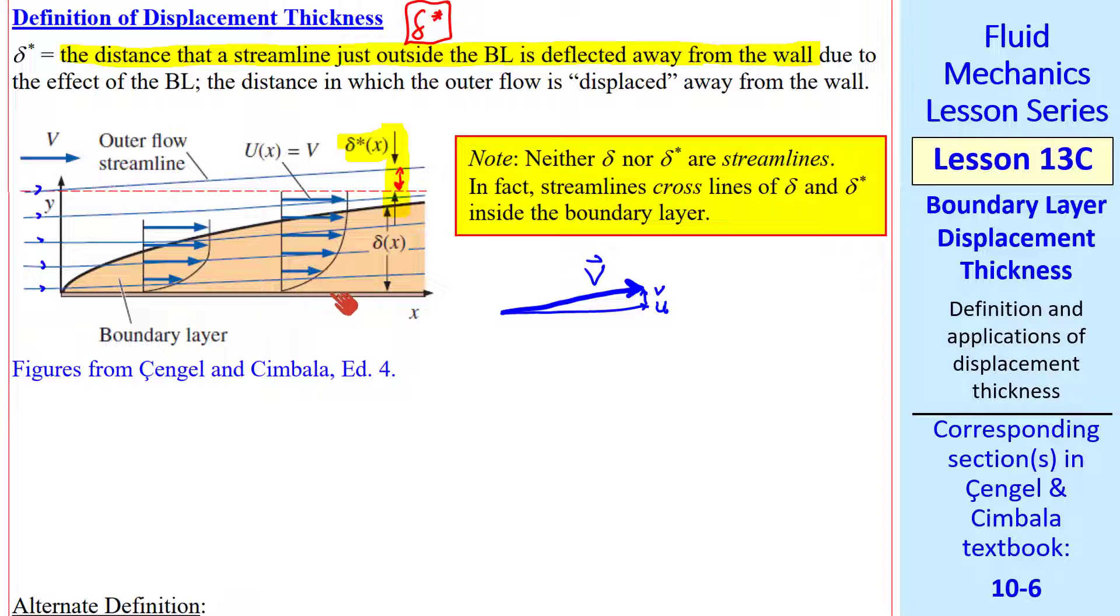As we move down the plate, the speed at some y location decreases, and therefore these streamlines move apart, reflecting that there's less flow rate between the streamlines. Notice how this streamline is close to the wall here, but is farther from the wall here. Between these two streamlines, there's a constant volume flow rate. Since the boundary layer is not carrying as much flow close to the wall, the streamline must diverge.